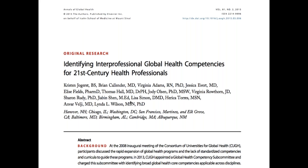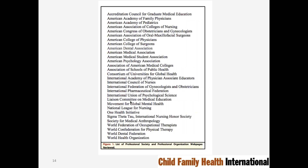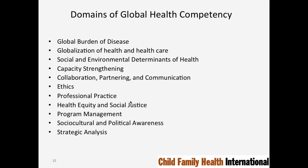We subsequently published a paper in the Annals of Global Health in 2015—an open access paper—laying out proposed competencies for two of the four levels. We reviewed many organizations' web pages as well as peer-reviewed articles and drew heavily on the Association of Schools of Public Health Competency Framework, ultimately proposing 11 domains of global health competencies.